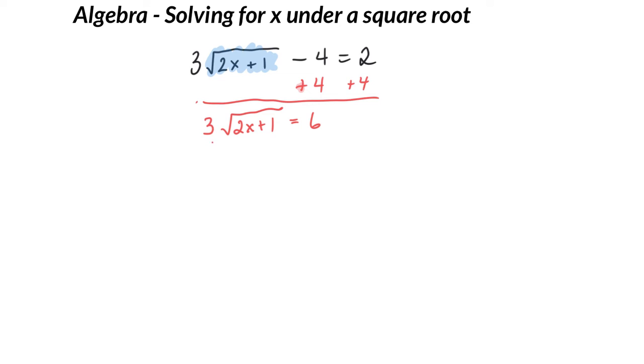I'm going to divide both sides by 3. Now, before I do any kind of squaring, I just always pause to think, if I took the square root of something, can I get an answer of 2? The answer is yes, I can. I can't get a negative 2, but I can get a positive 2. So I'm going to square both sides.